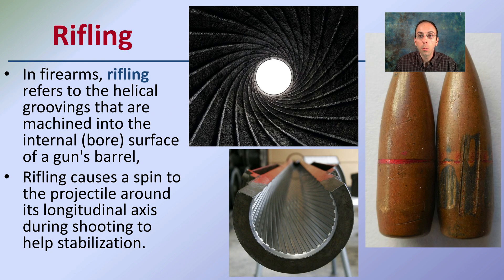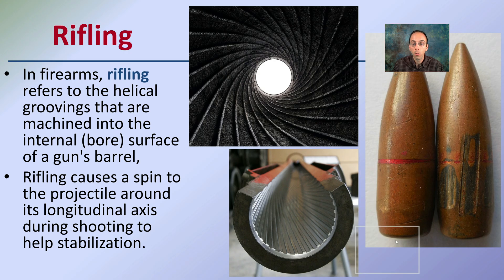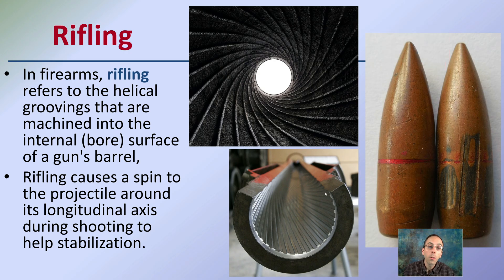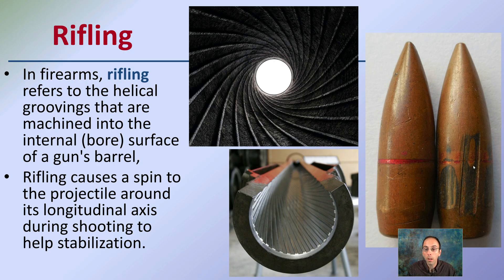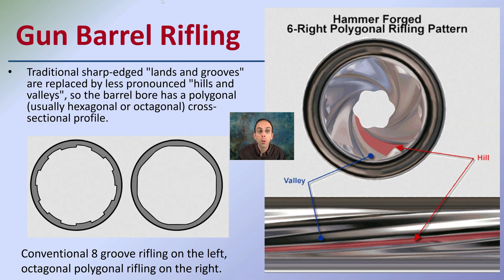Now, the rifling. When we're talking about a bullet, we want to think about the rifling of the barrel it's traveling through. In firearms, rifling consists of helical grooves machined into the interior bore surface of the gun's barrel. You can see the barrel here with a cutaway showing that rifling. It causes the bullet to spin around its longitudinal axis during firing to help stabilize it — similar to throwing a spiral on a football. As the bullet travels through at high speed while spinning, markings do occur.